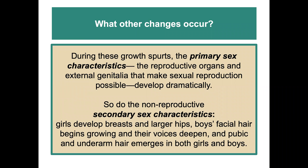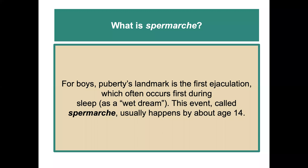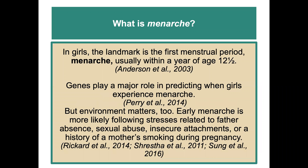Other changes during these growth spurts include the dramatic development of primary sex characteristics, as well as non-reproductive secondary sex characteristics — such as enlarging breasts and hips for females, and facial hair and deepening voice for males. For boys, puberty's landmark event is called spermarche, usually happening at about age 14. For females, the landmark is the first menstrual period, menarche, usually occurring within a year of about age 12 and a half.